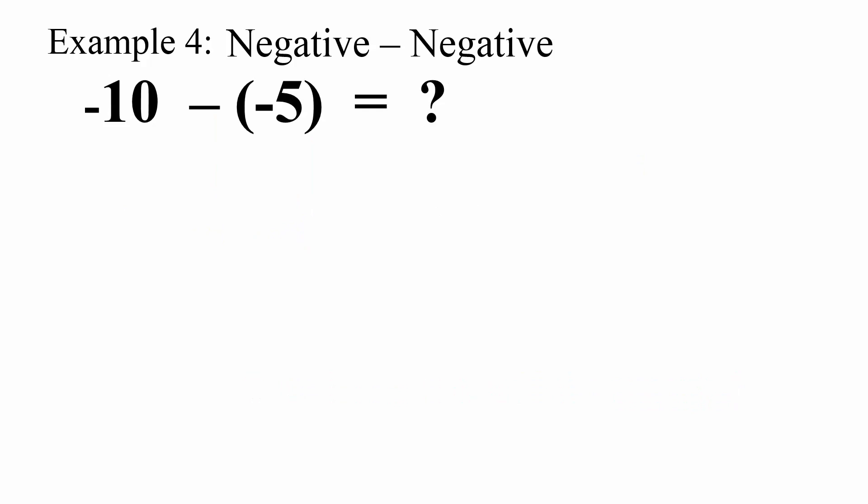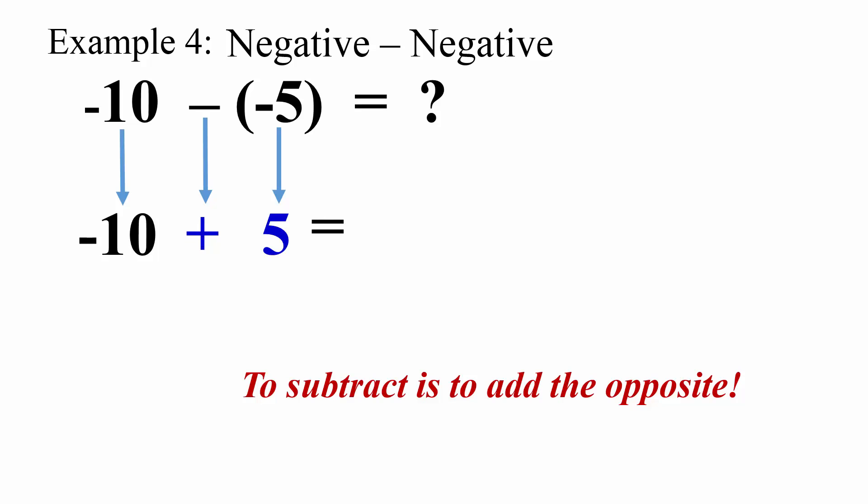Example 4: negative 10 subtract negative 5. Negative 10 stays the same. Subtraction become addition. The opposite of negative 5 is positive 5. Negative 10 plus positive 5 equals negative 5.